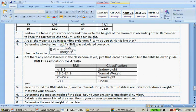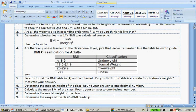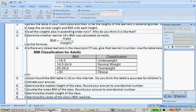Jackson found the BMI table in 4 on the internet. Do you think that this table is accurate for children's weight? Determine the median height of the class. Round your answer to one decimal. Calculate the mean BMI of the class. Round your answer to one decimal. Determine the modal weight of the class and determine the range of the class's BMI readings.